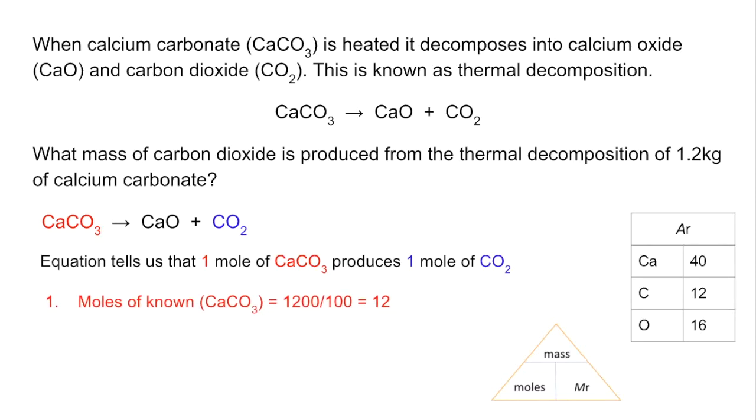First step: calculate the moles of the known chemical. So in this question, calcium carbonate's the known chemical because we know the mass - we were told in the question we had 1.2 kilos of it to thermally decompose. The slight catch is just to turn those kilos into grams before we work out the moles. So 1.2 kilos is 1,200 grams, divided by the Mr of calcium carbonate which is a hundred, gives us 12 moles of calcium carbonate.